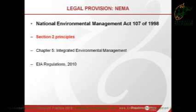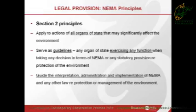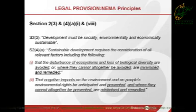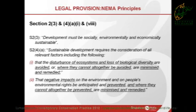In NEMA, essentially there are three main areas that apply to biodiversity offsets. Section 2 principles must serve as guidelines for any organ of state exercising any function when taking a decision in terms of NEMA or any statutory provision relating to protection of the environment. They're also important for guiding the interpretation, administration, and implementation of NEMA. There's only one place in the whole of NEMA that refers to biodiversity at all, and that's in Section 2.4(a)(i), within the definition of sustainable development. It requires that the disturbance of ecosystems and loss of biological diversity are avoided, and where they cannot be avoided, they're minimized and remedied.